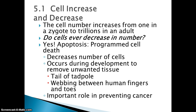Cell increase and decrease is the section heading. The cell number increases from 1 in a zygote to trillions in an adult, and it does this through a process called mitosis. But do cells ever decrease in number? Yes — apoptosis, which if you watched that video, you saw a cell destroy itself, so it's programmed cell death. It's a decrease in number of cells. It also has some uses in organisms: we would have webbed fingers and toes because the tissue between our fingers would never disappear without apoptosis, and the tail of a tadpole would never disappear without apoptosis. Also, the cell has the ability to censor itself, so whenever it begins to lose control in the cell cycle, it can do apoptosis to prevent cancer. But we'll talk about cancer in a little bit — cancer does things to mess with the mechanisms which govern apoptosis.